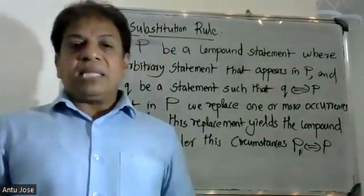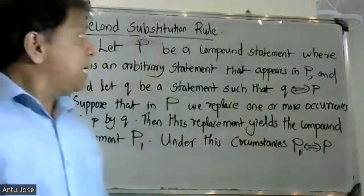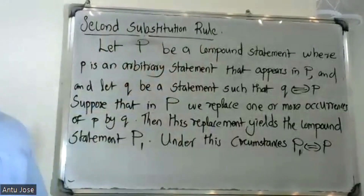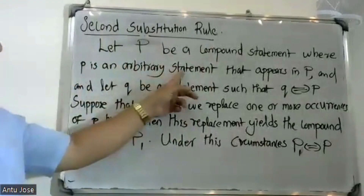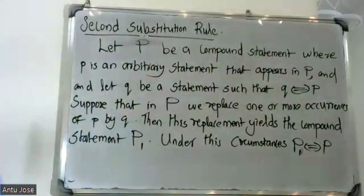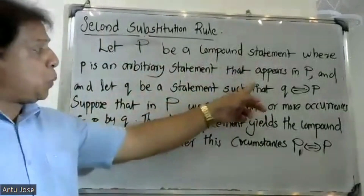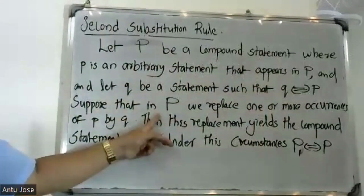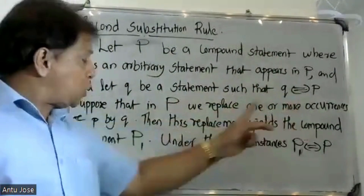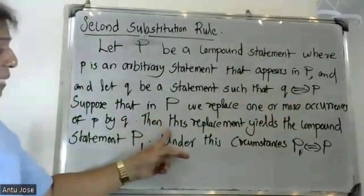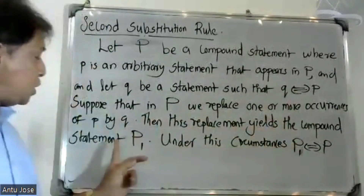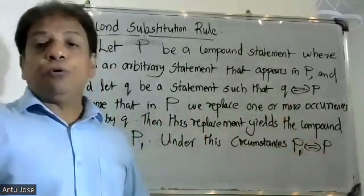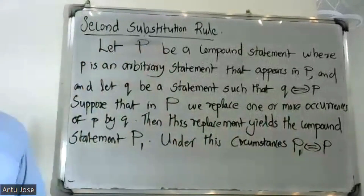Good morning students. Let P be a compound statement, where p is an arbitrary statement that appears in P, and let q be a statement such that q is equal to p. Suppose that in P we replace one or more occurrences of p by q. Then this replacement is the compound statement P1. Under these circumstances, P1 is equal to P. This is the Second Substitution Rule.